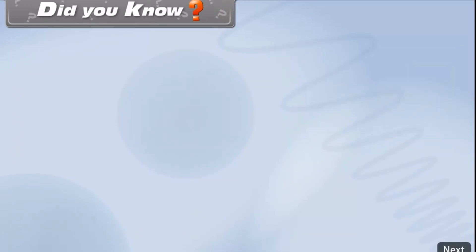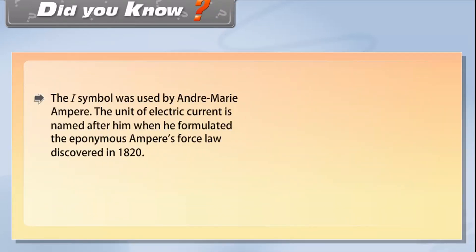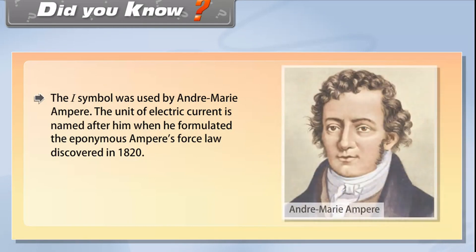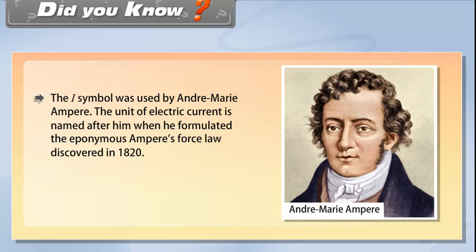Did you know? The symbol I was used by André-Marie Ampère. The unit of electric current is named after him when he formulated Ampère's law, discovered in 1820.